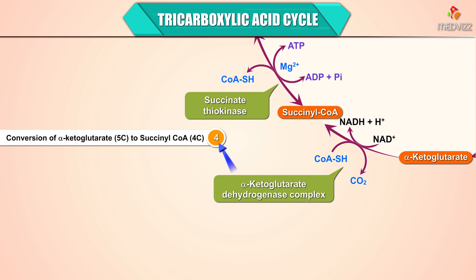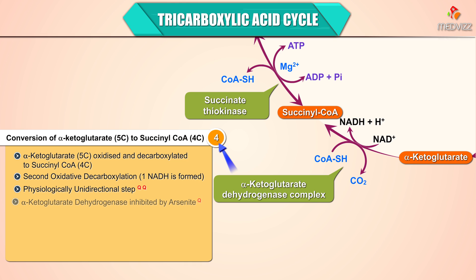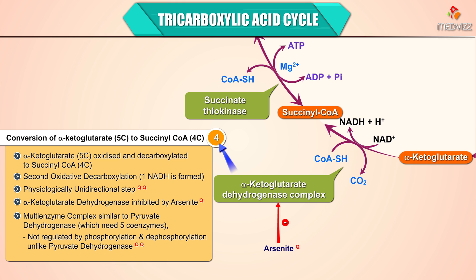Step 4 is the conversion of alpha-ketoglutarate to succinyl coenzyme A. Alpha-ketoglutarate is oxidatively decarboxylated to succinyl coenzyme A. This is the second oxidative decarboxylation, and one NADH is formed. Physiologically it is a unidirectional step. Alpha-ketoglutarate dehydrogenase is inhibited by arsenide. It is a multi-enzyme complex similar to pyruvate dehydrogenase, requiring five coenzymes, but unlike pyruvate dehydrogenase, it is not regulated by phosphorylation and dephosphorylation.